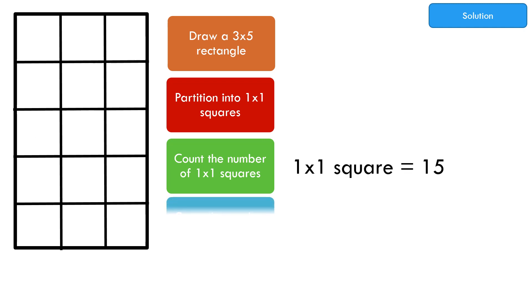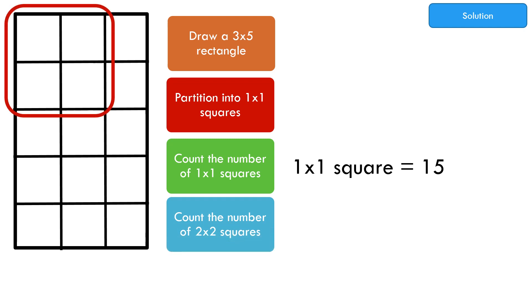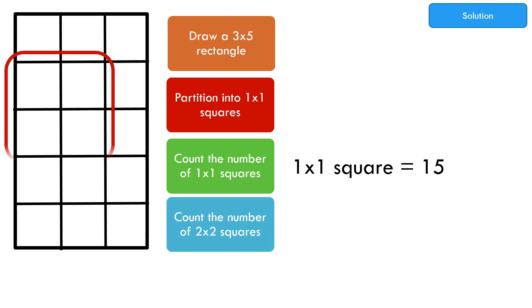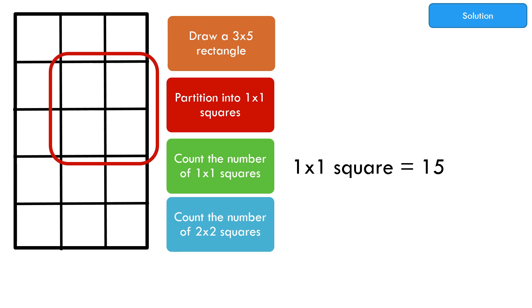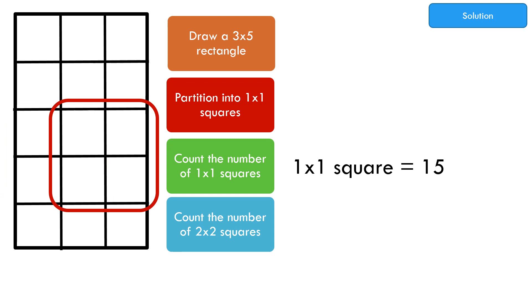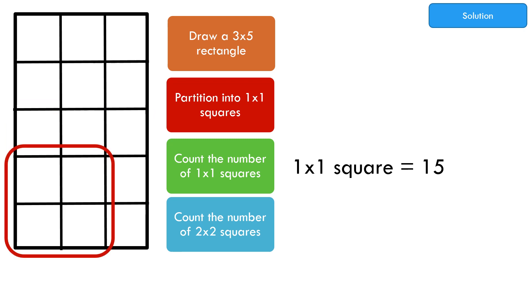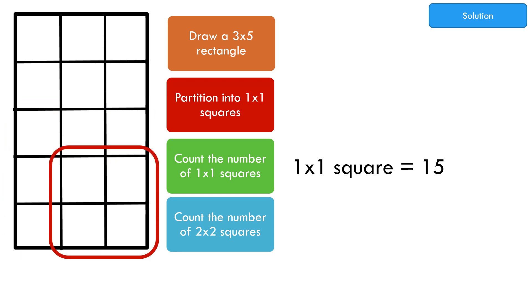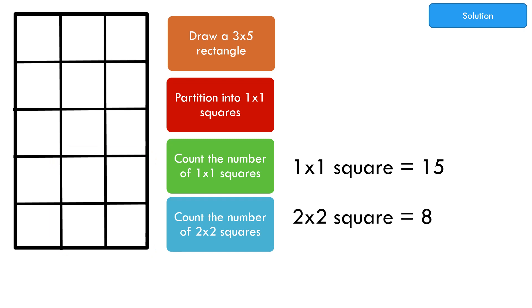Count the number of 2 by 2 squares. Counting each one: 1, 2, 3, 4, 5, 6, 7, 8. We have 8 two-by-two squares.